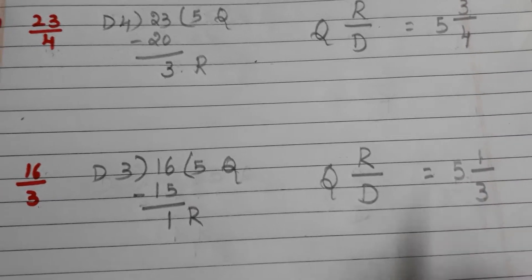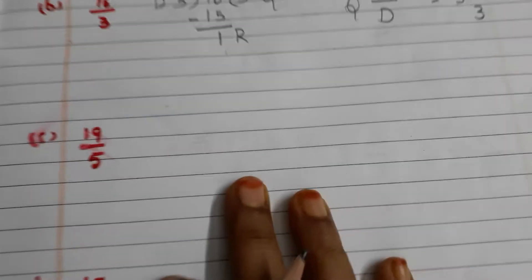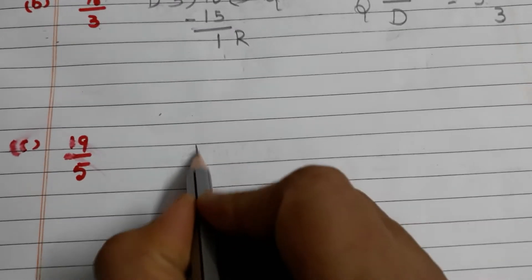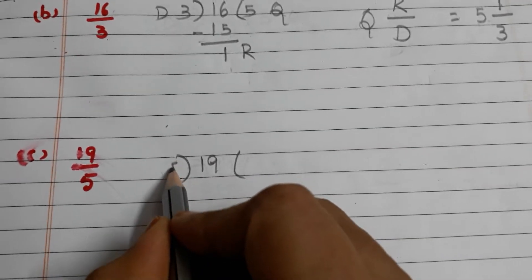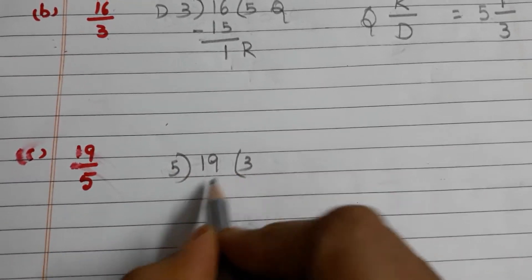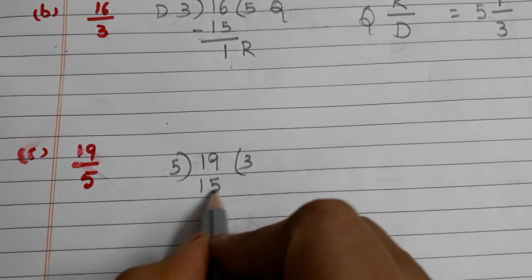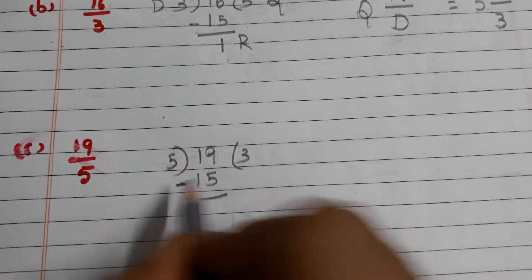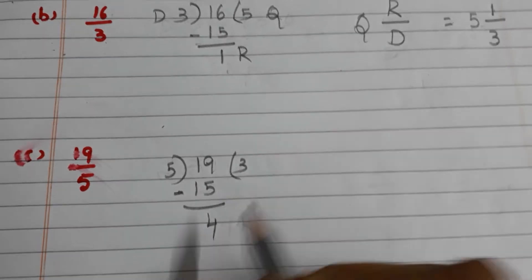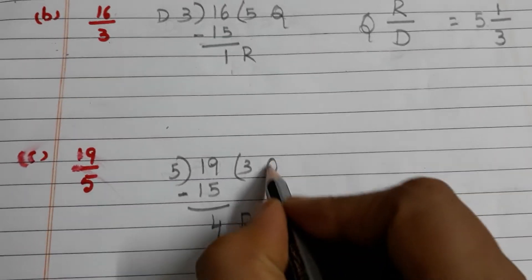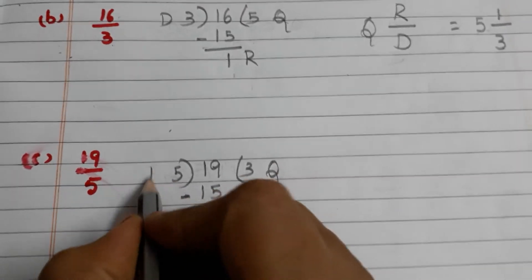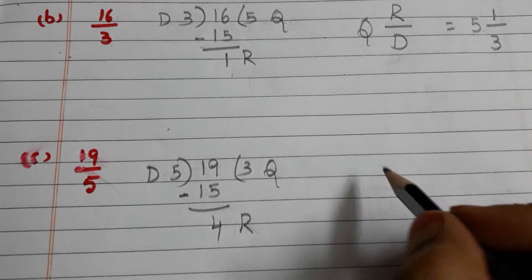Let us go with another one: 19 by 5. We are dividing 19 with 5. 5 times 3 is 15. 19 minus 15 is 4. This is the remainder, this is the quotient, and this is the divisor.